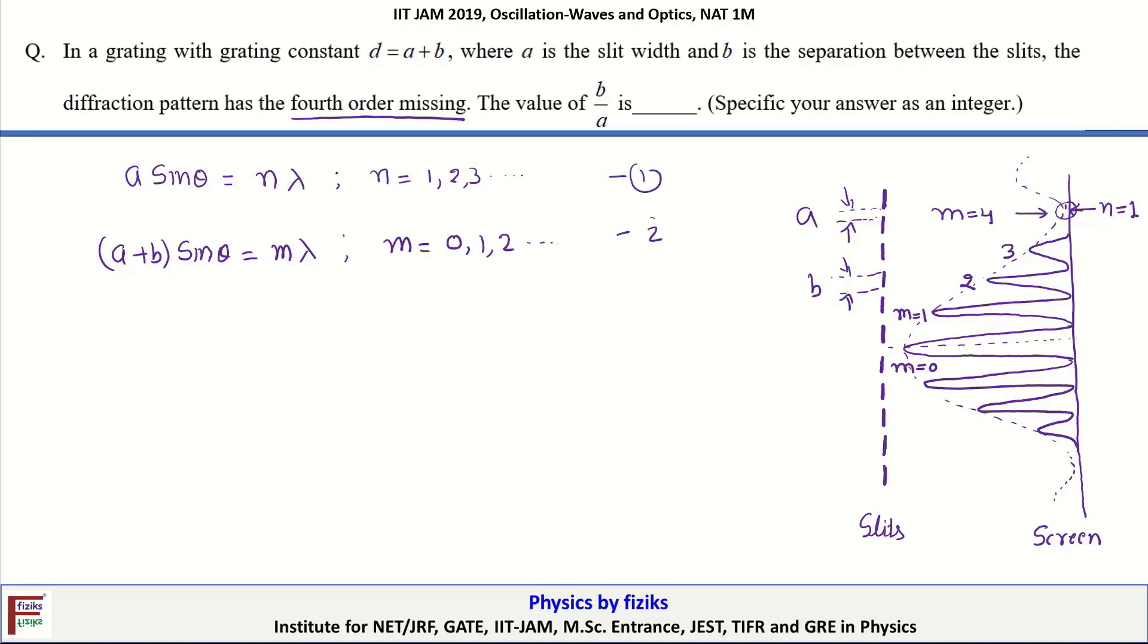From these two equations, equation number 1 and equation number 2, we can say that the mth order will be missing if they lie at the same angle. We can divide these two equations and we get: a upon (a plus b) equal to n upon m.